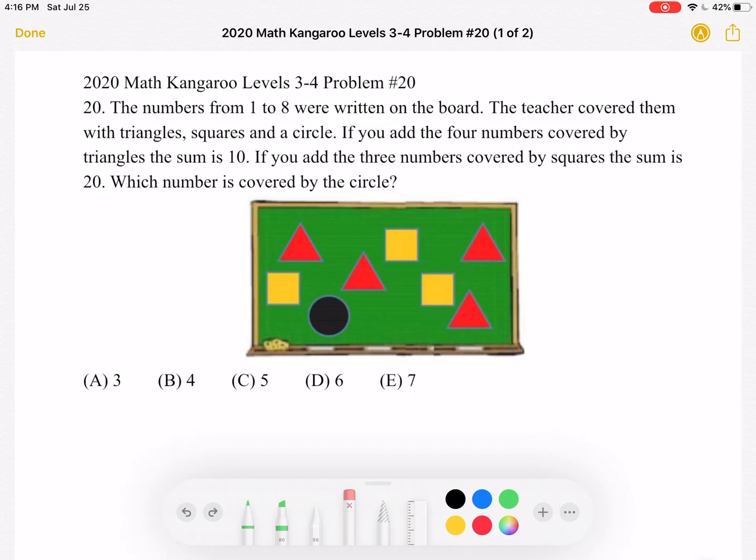Which number is covered by the circle? A, 3, B, 4, C, 5, D, 6, or E, 7.